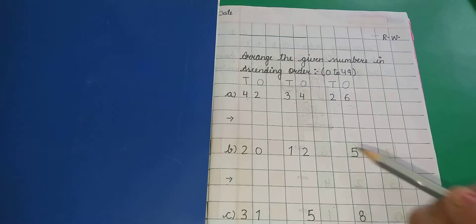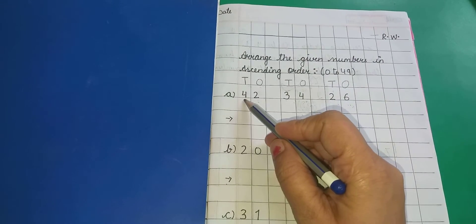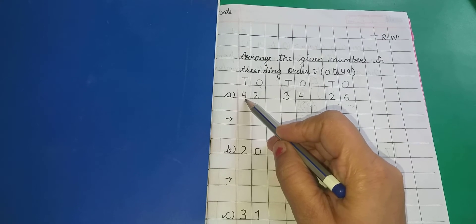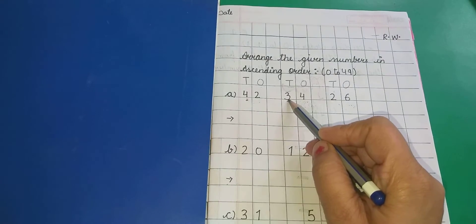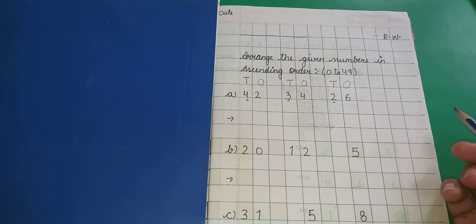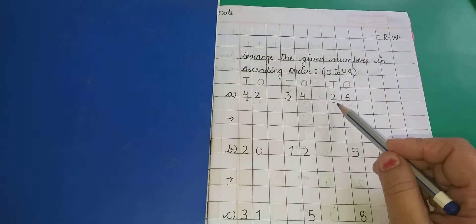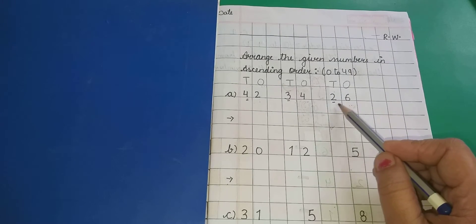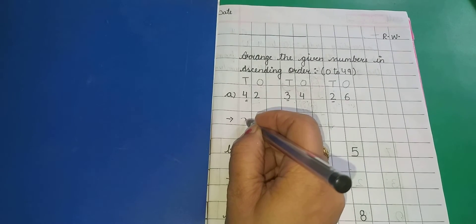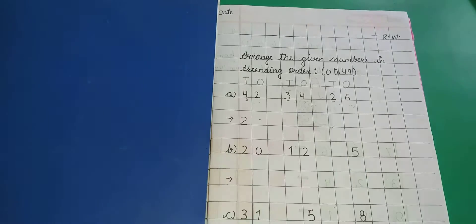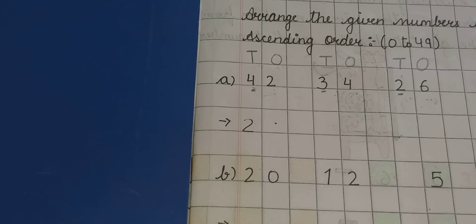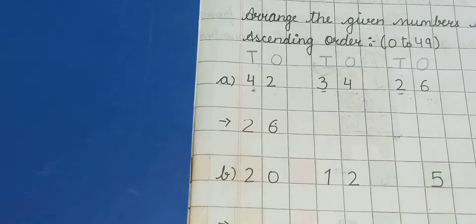So kids, first of all compare the numbers given at tens place. Numbers जो tens के place पर दिये हैं, आप उन्हें compare करेंगे. Here it is given 4, 3, 2. आप मुझे बताइए, counting में आप सबसे पहले कौन सा number लिखते हैं? Number 2. So आपका यह जो given number है — 2, 6, 26 — smallest number है. Write down here: 2, 6 — 26.